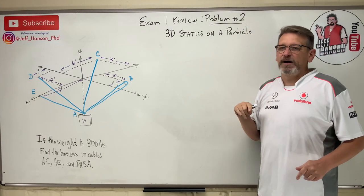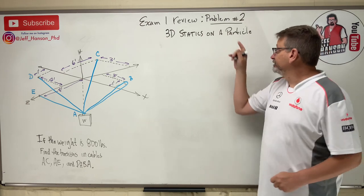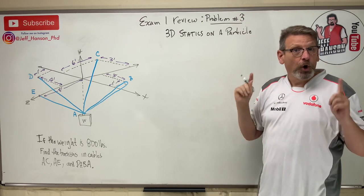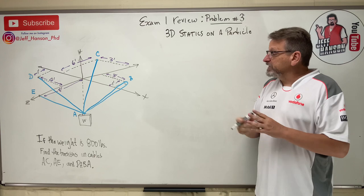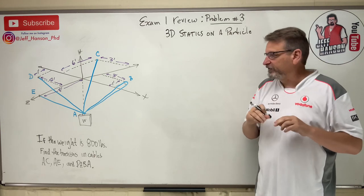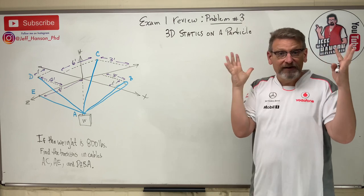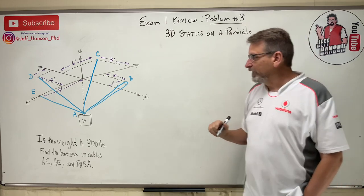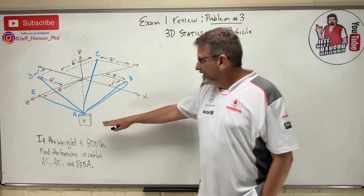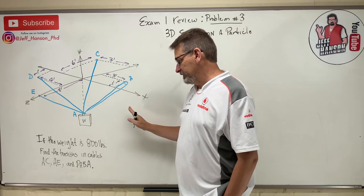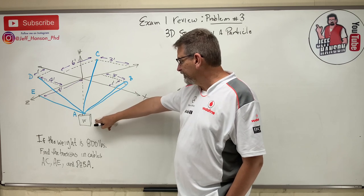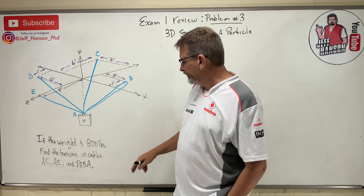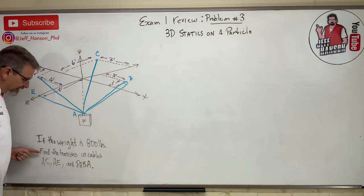Okay gang, here we go — test number one, review problem number three. This is statics on a particle or a single point. This particular problem was on a test last semester and it blew students' minds. We can do it together. I've got a weight hanging from this system — the weight is 800 pounds. The system looks like it has one, two, three, four, five ropes. Find the tension in cable AC.